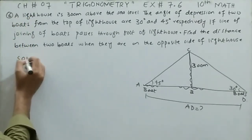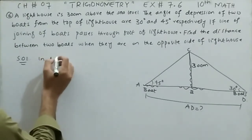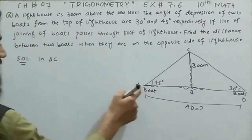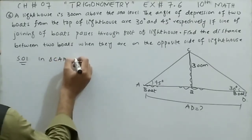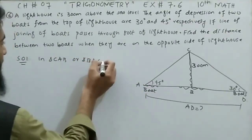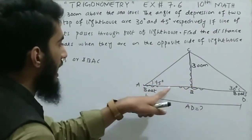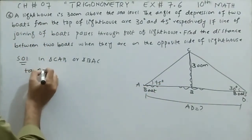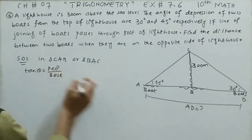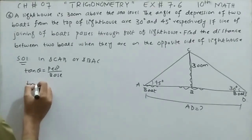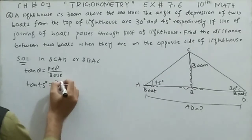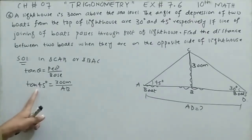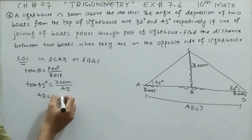Moving to the solution of question number 6: taking triangle CAB (angle at A, which is 45 degrees). Tangent theta equals perpendicular divided by base. Tangent 45 degrees equals 300 meters divided by AB. Tangent 45 degrees equals 1, so 1 × AB equals 300 meters, giving AB equals 300 meters.